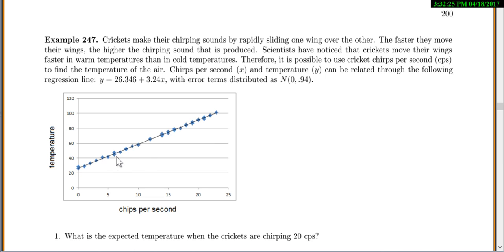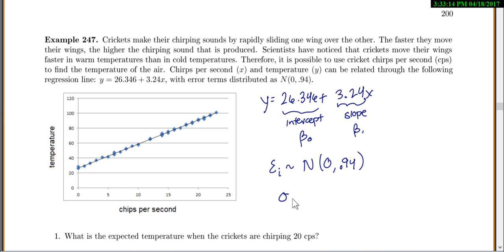So when you look at this nice scatter plot, you can see that the points are very close to the line. That's nice, that's telling us it's a very linear relationship. Also, my slope is going up, so it's a positive association. So let's write down some of the things that they told us here. The equation of the line is 26.346 plus 3.24x. That means this is my intercept, or we call that beta 0 in this class. And 3.24x is my slope, which we'll call beta 1. And then it told me my error terms are going to be normally distributed with a 0 in 0.94. And so this is the variance is 0.94, so the standard deviation would be the square root of 0.94.